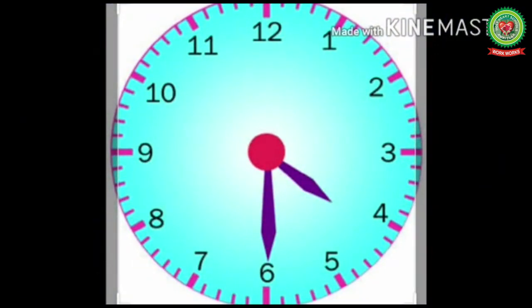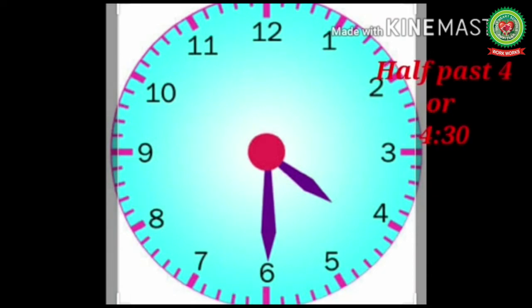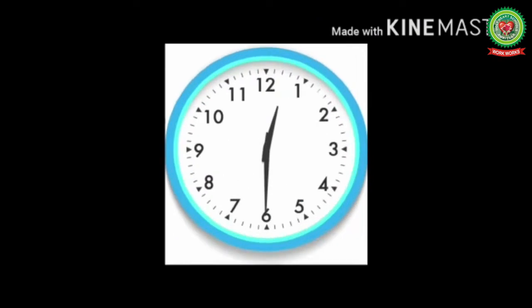Now tell me the time on this clock. The long hand is pointing at six so it's half past the hour. Now half past what? The short hand has moved halfway from four towards five. It means the short hand is pointing exactly halfway between four and five. So the time is half past four, or four thirty.